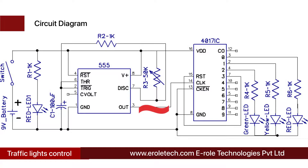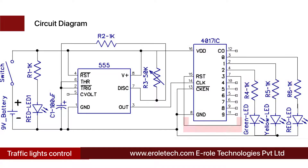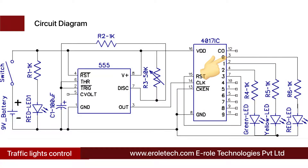When the third pulse from the 555 timer IC arrives, the IC gives a high output at pin number 7. Pin number 7 is connected with the reset pin of the IC. The reset pulse will reset the IC, and it will start giving output from pin number 3 again. This same process will go on indefinitely, and the red, green, and yellow LEDs will keep blinking one by one. The timing of output pulses can be adjusted by adjusting the variable resistor.